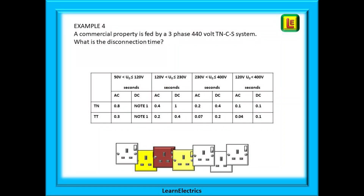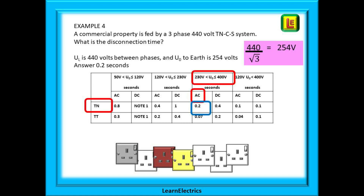The last example, number 4, is another commercial property but this time with a 440 volt TNCS system. First calculate U0 again — the line-to-line voltage is 440 volts. 440 divided by 1.732 gives us 254 volts. 254 volts puts us in the voltage range greater than 230 volts but less than 400 volts, and the answer you should get is a disconnection time of 0.2 seconds.